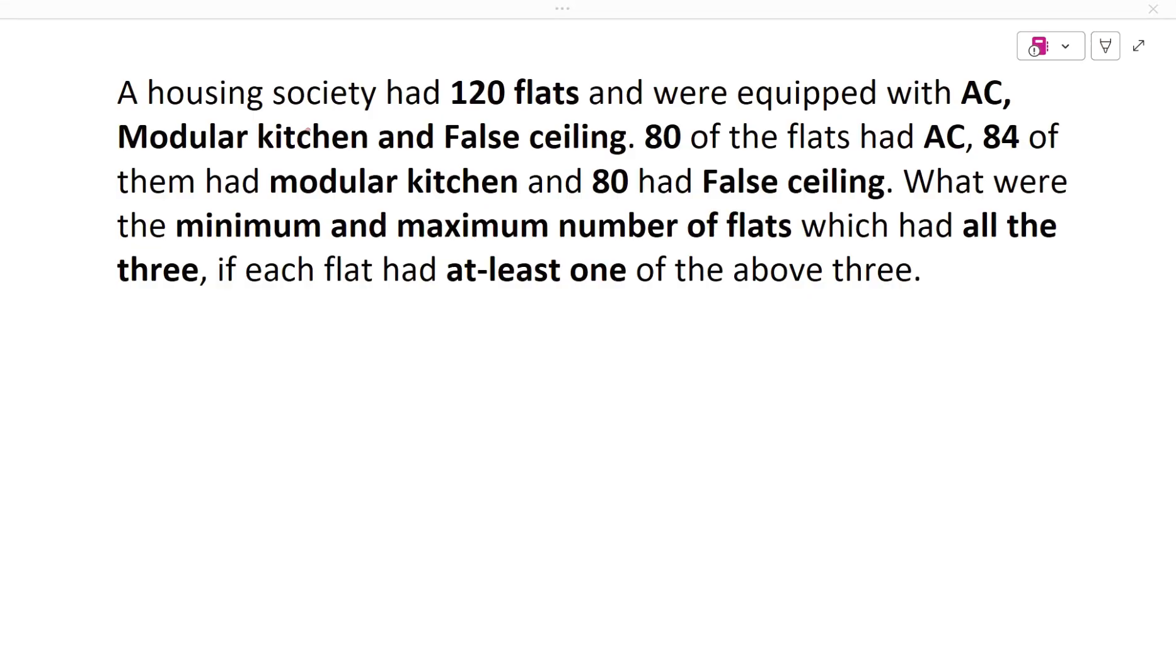A housing society had 120 flats and were equipped with AC, modular kitchen, and false ceiling. 80 of the flats had AC, 84 of them had modular kitchen, and 80 had false ceiling. What were the minimum and the maximum number of flats which had all three, if each flat had at least one of the above three.